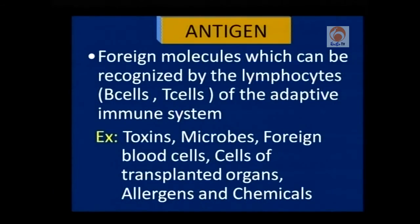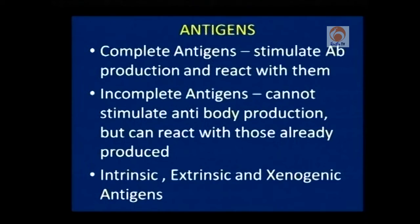Antigens include a number of toxins, a number of microbes, at times foreign blood cells when we go for transfusion, cells of transplanted organs, allergens to which we are exposed in daily life, and certain chemicals as in the case of our labs. All these can function as efficient antigenic substances. Based on their ability to give an immune response, antigens are of two types: complete antigens and incomplete antigens.